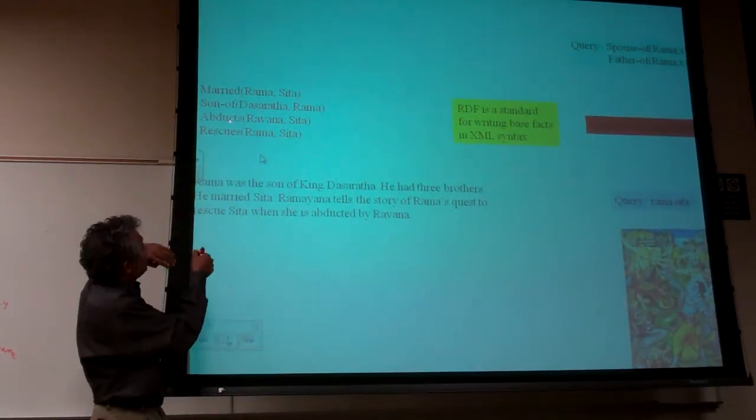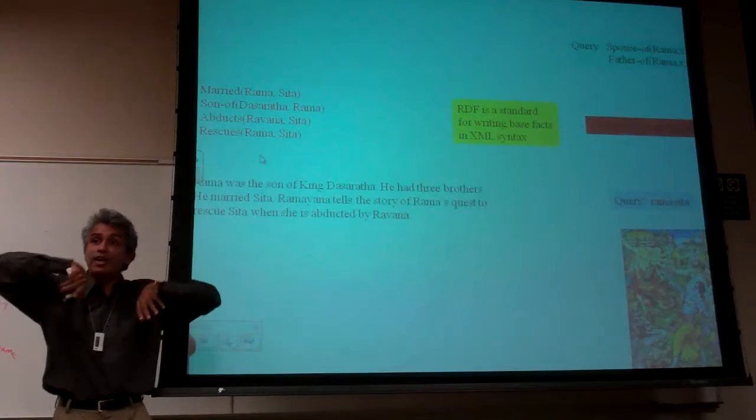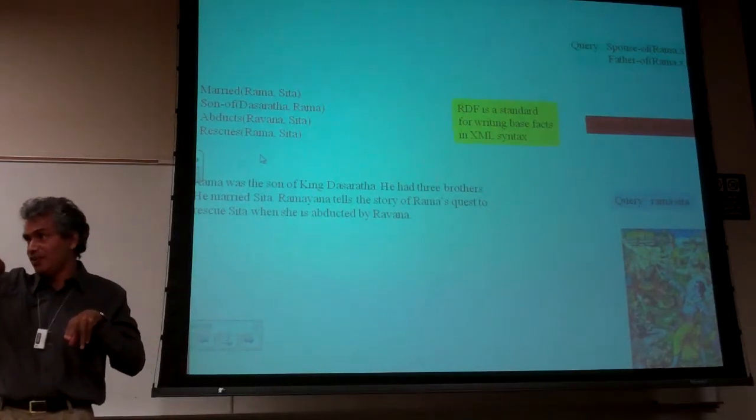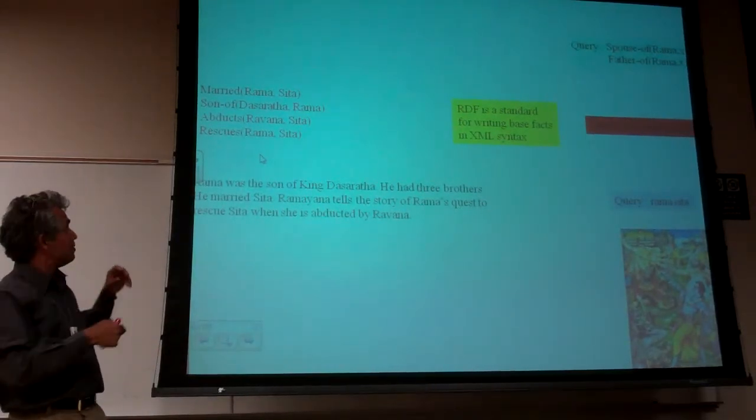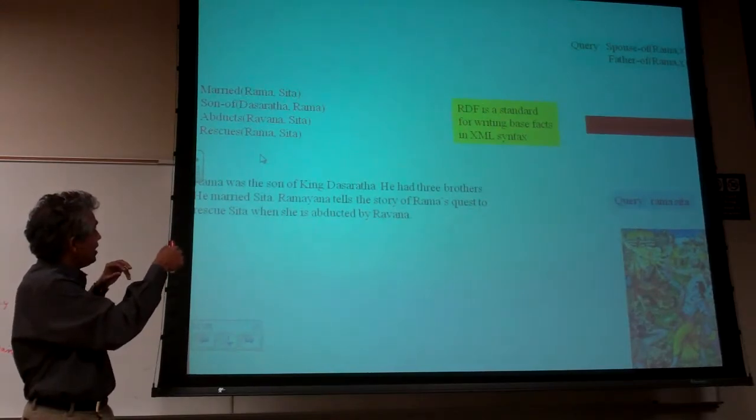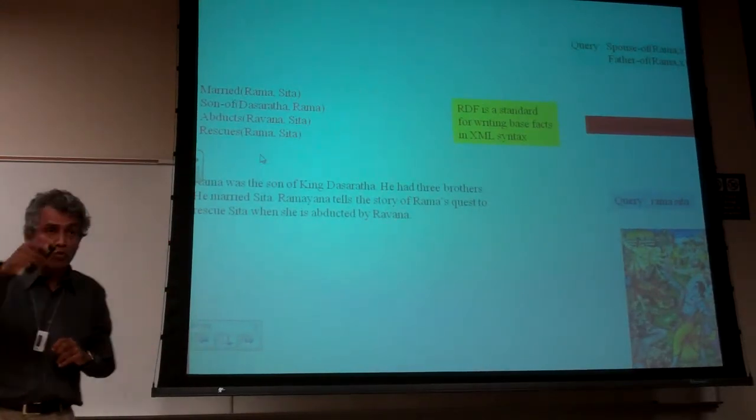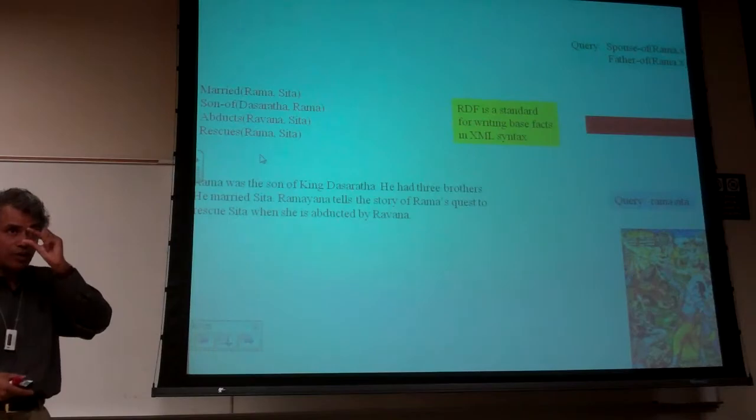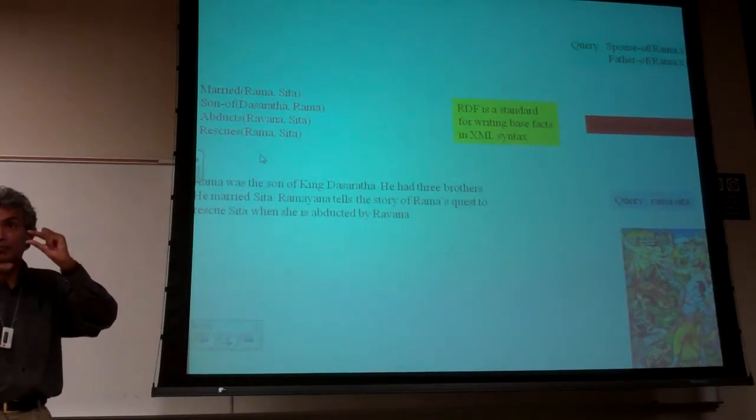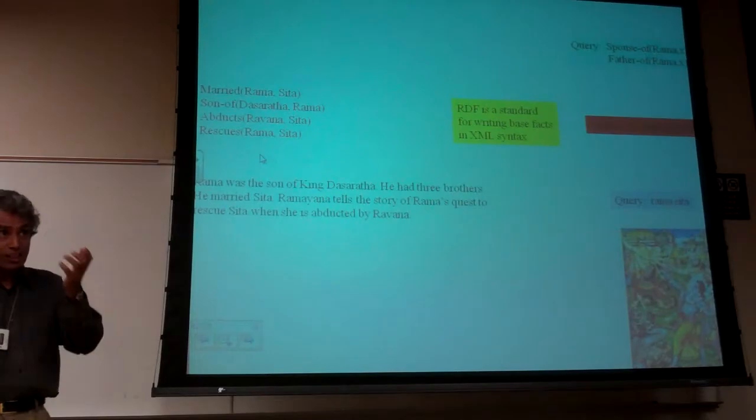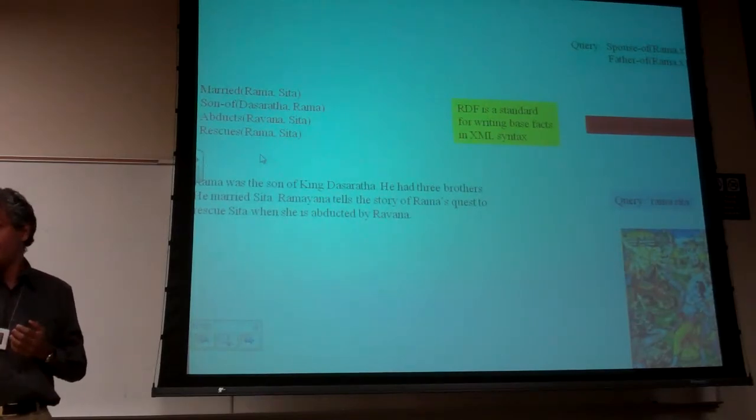For every son of relation, I also have to write a father of relation, which is the inverse of son of relation. And similarly, for every married relation, I also say, if Rama married Sita, then I have to write two things: spouse of Rama Sita, spouse of Sita Rama. That's what your background analogy is all about.